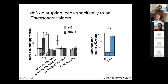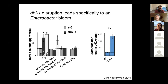We designed primers specifically assessing the quantity of Enterobacteriaceae in the synthetic community, and looked at DBL1 mutant worms raised on the full synthetic community. The Enterobacter-specific primers showed that the full expansion could be accounted for by expansion of Enterobacter alone. So there is relatively high specificity of the TGF-beta pathway to control specific members of the Enterobacteriaceae family — namely Enterobacter.